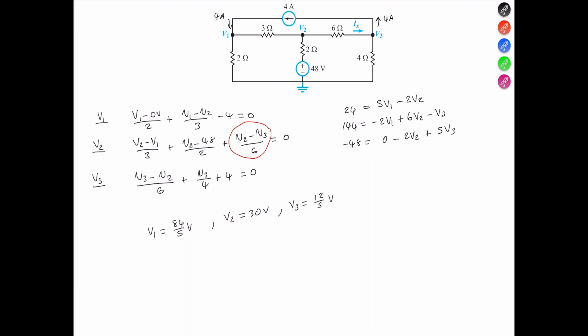So this is the one I'm talking about, we can choose this, because we notice that the Ix is passing through the 6 ohms resistor, and V2 with reference to V3 is the voltage across that resistor, and if we divide the voltage across that resistor by that resistor, we get the current.